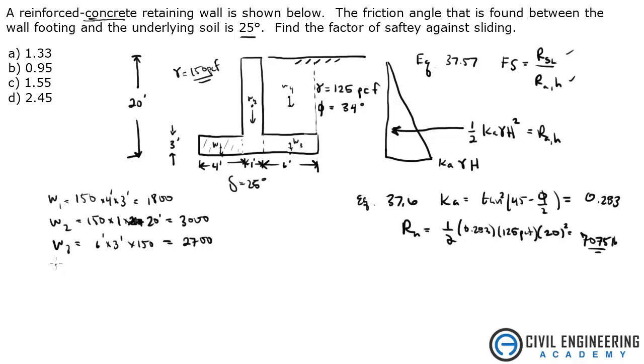And W of the soil, or W4 is going to be 125 times 6 times 17. That gives me 12,750. So let's add all those up.